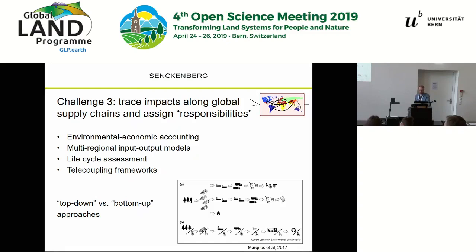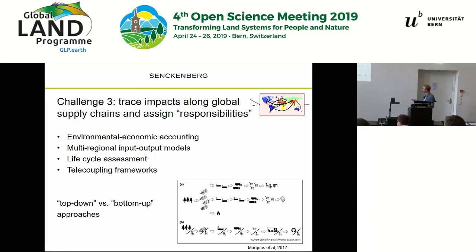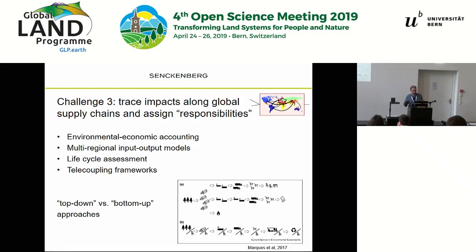Two distinctions to introduce: on one hand, top-down approaches look at impacts at the global level and try to distribute them among different processes, activities, and products — allocating responsibilities. The other is a lifecycle bottom-up approach that looks at an individual product, for example a chair, and assigns impacts to different stages of its lifecycle, with a clearer focus on a specific product and production system.